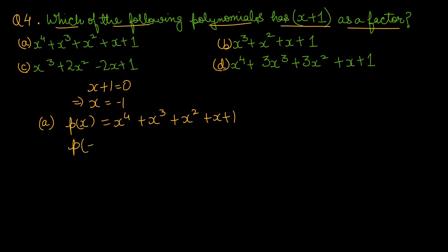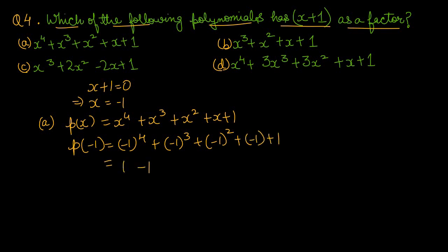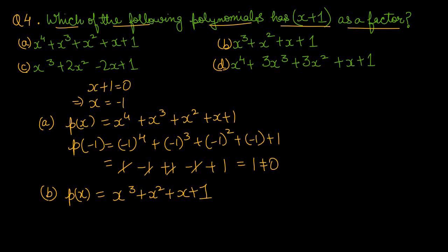Option A में x = -1 fit करते हैं: (-1)⁴ + (-1)³ + (-1)² + (-1) + 1 = 1 - 1 + 1 - 1 + 1। 1 से 1 कट गया, 1 से 1 कट गया, और हमारे पास 1 आया। यह 0 नहीं आया, तो इसका मतलब x plus 1 इसका factor नहीं है।